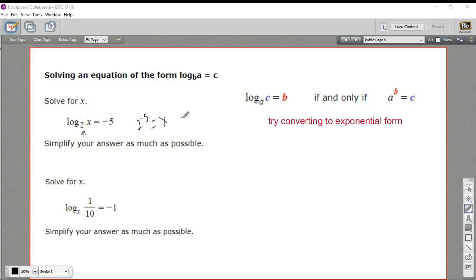So 2 to the negative fifth is 1 over 2 to the fifth. That's 1/32. This up here will help you convert back and forth between logarithmic and exponential notation and that should help you with these problems.